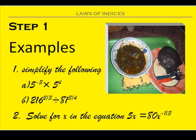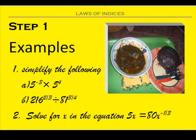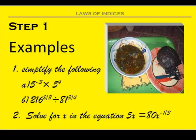Learners, we'll look at some examples. Example 1 — simplify the following. A: 5 raised to the power minus 3, times 5 raised to the power 4. B: 216 raised to the power 2 over 3, divided by 81 raised to the power 3 over 4. Question 2: solve for x in the equation 5x equals 80x raised to the power of negative 1 over 3.